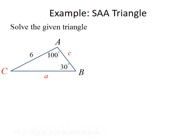Next, we solve a side-angle-angle triangle where angle A is 100 degrees, angle B is 30 degrees, and side b equals 6. Since we know two angles, we first find the third: angle C equals 180 minus 100 minus 30, which gives us 50 degrees.